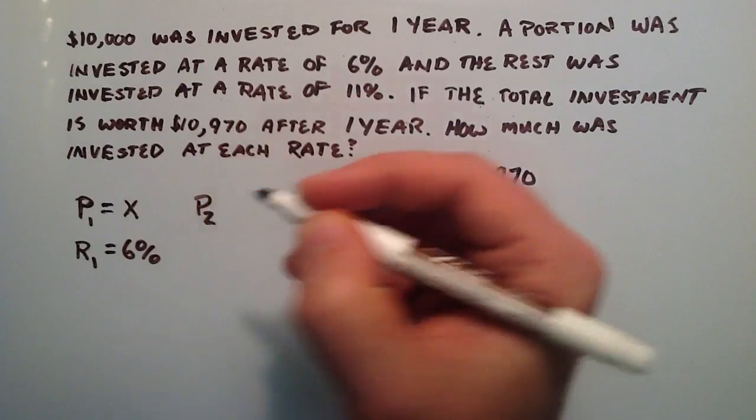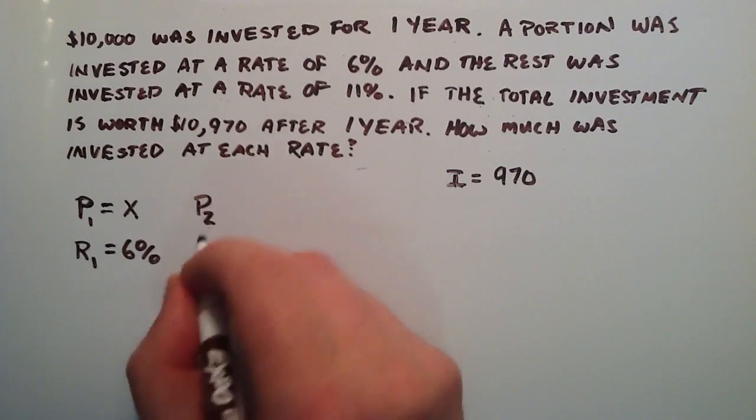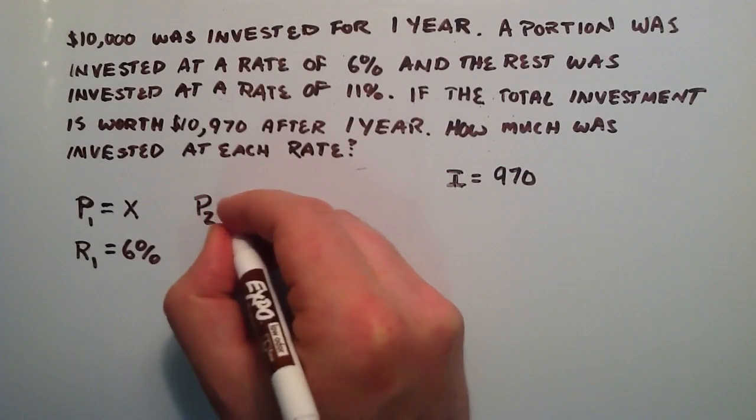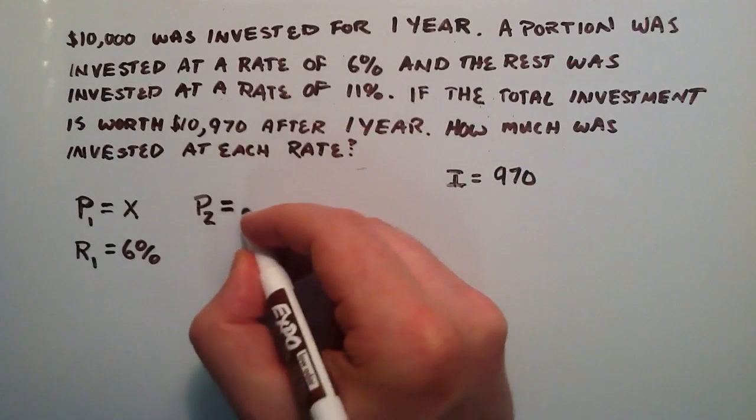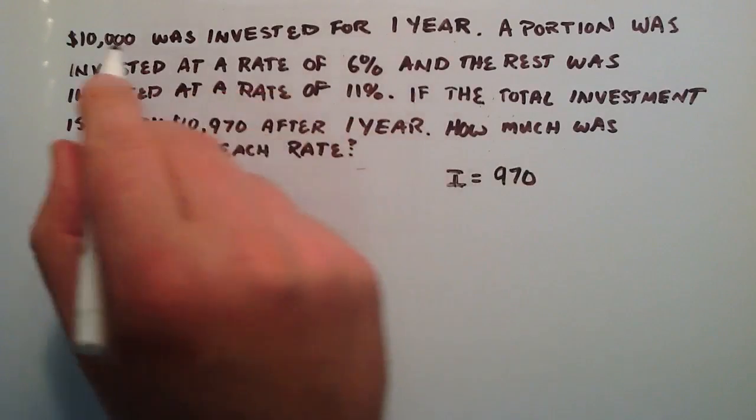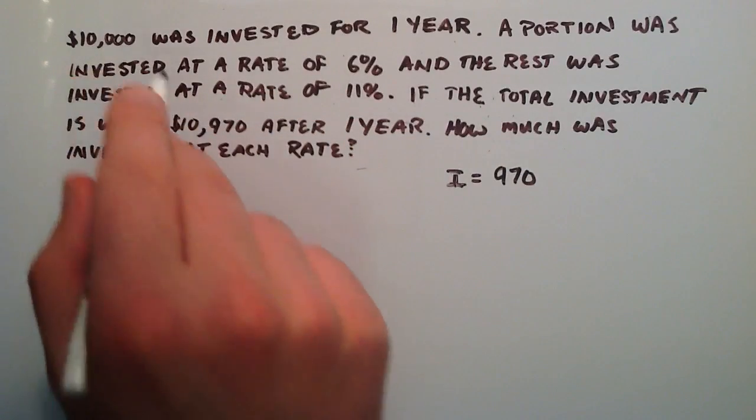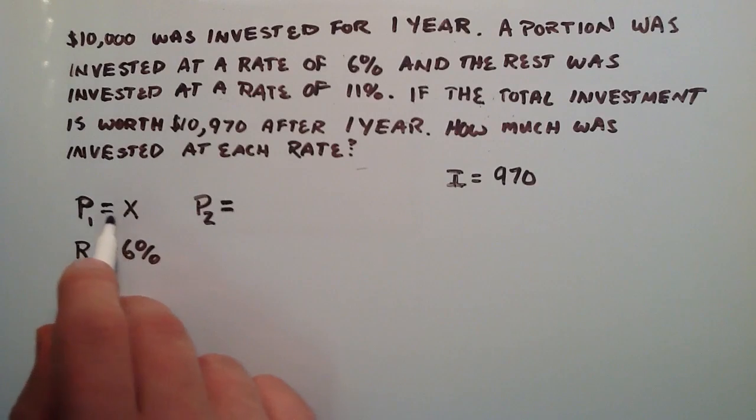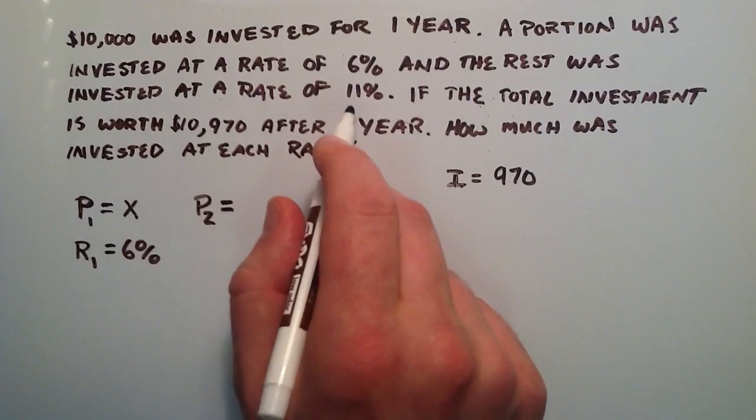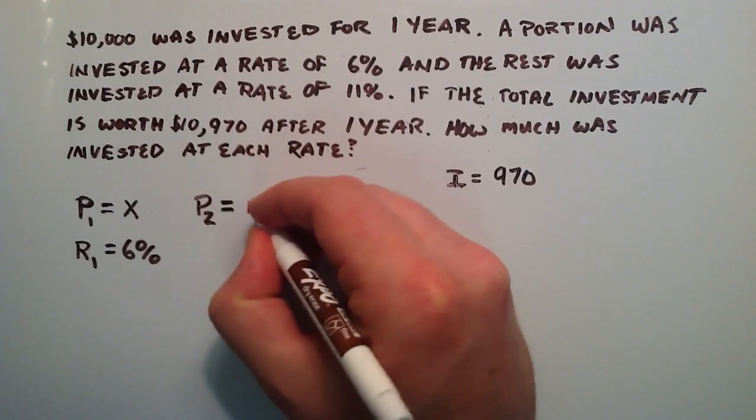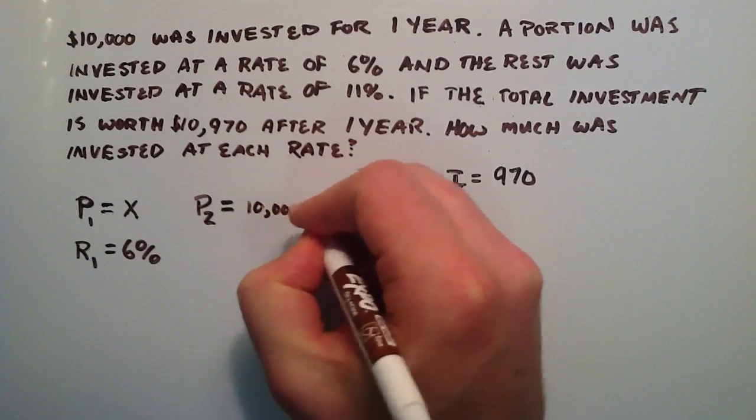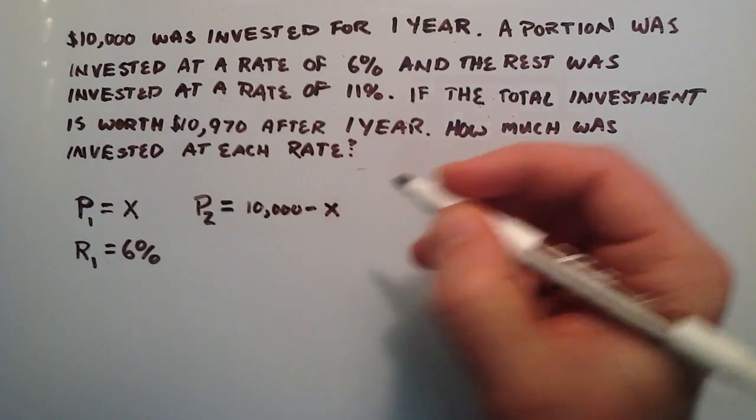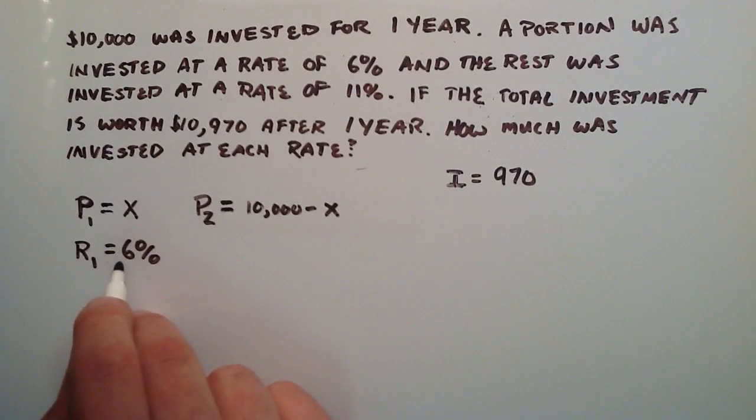So P₂ would be Principle 2 or the amount of money we invested at the second rate. So P₂, we know we started with $10,000 total. And we're going to use some of it to invest into the first 6% rate. So the rest of it we're going to invest in the 11% rate. So P₂ has to be $10,000 minus the amount that we invested in the other rate. So that way that accounts for the entire $10,000.